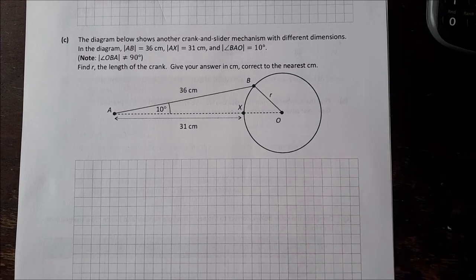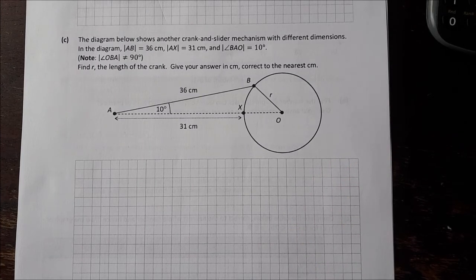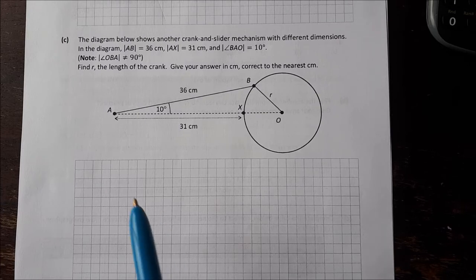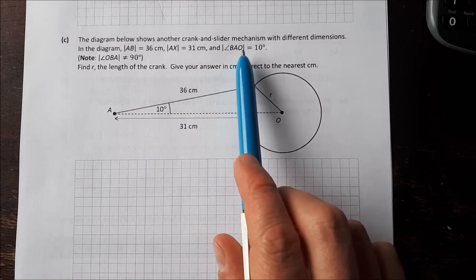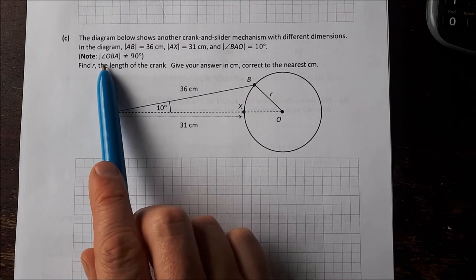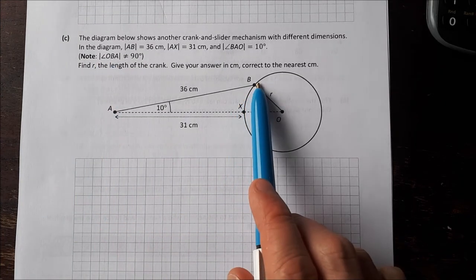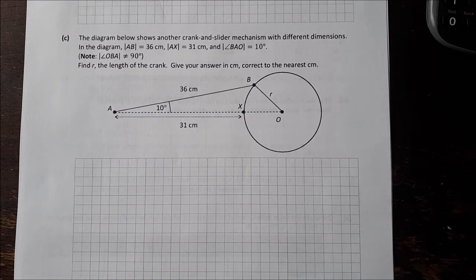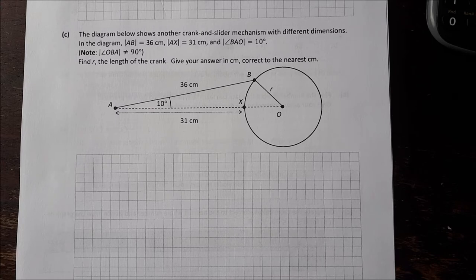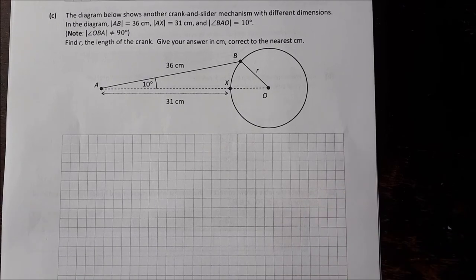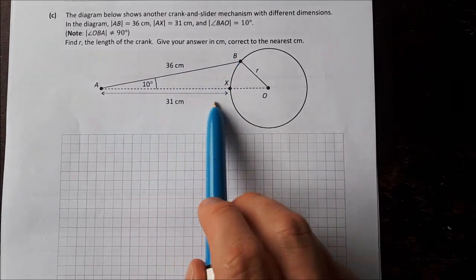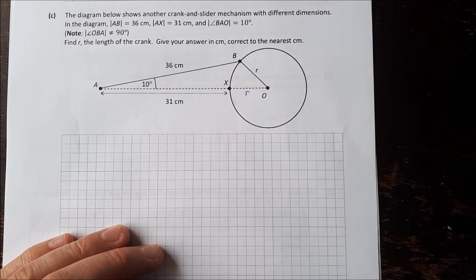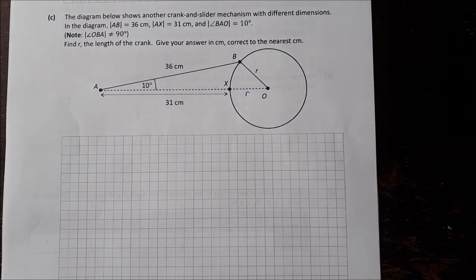On to part C. The diagram below shows another crank and slider mechanism with different dimensions. In the diagram AB is 36, AX is 31, and BOA this angle here is 10. Note OBA is not 90 degrees. Find OR the length of the crank and give your answer in centimeters correct to the nearest centimeter. I'm going to use the cosine rule for this. Because I'm looking for OR, I have the angle opposite, I have this side and I have this side. In terms of OR this would be 31 plus OR, so I can use the cosine rule there and work it out.